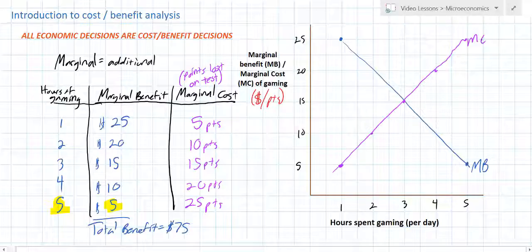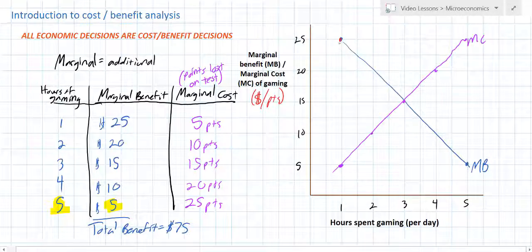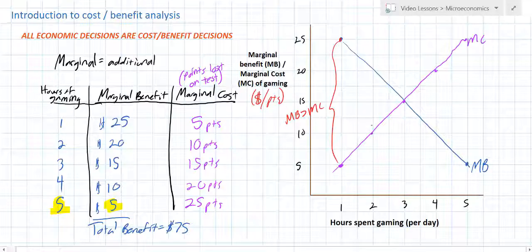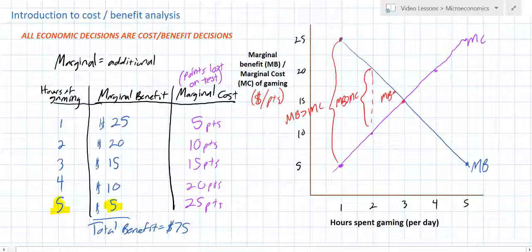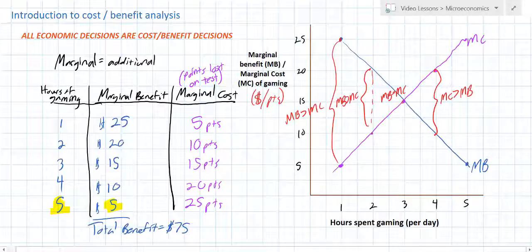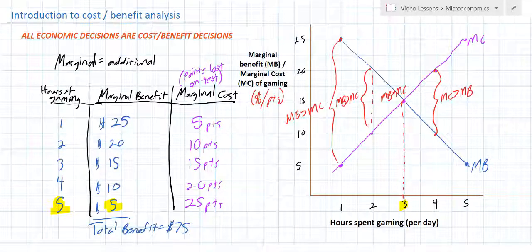Looking at this graph, we can draw some conclusions about how many hours I should spend gaming. For the first hour, the marginal benefit of $25 worth of happiness far exceeds the marginal cost of only five points lost on the test, so it makes sense to game at least one hour. The second hour, again, marginal benefit is greater than marginal cost. The third hour, the marginal benefit equals the marginal cost. By the fourth hour, the marginal cost exceeds the marginal benefit, so it probably doesn't make sense to play more than three hours of video games.